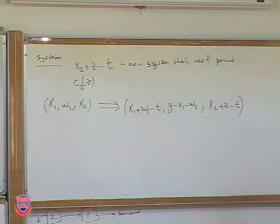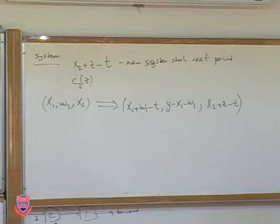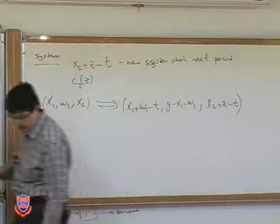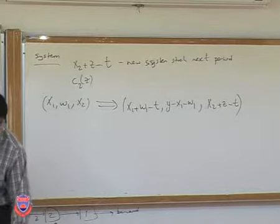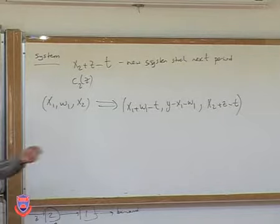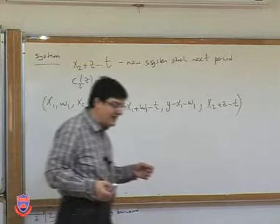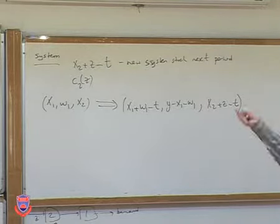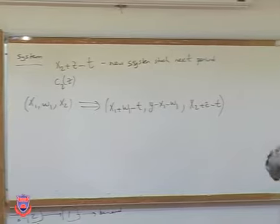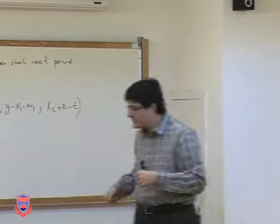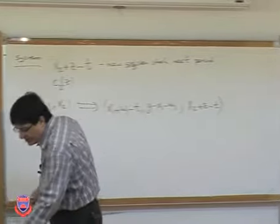This is the transformation from one period to the next after taking all decisions. This is one of the key steps — it corresponds to writing the state equations in dynamic programming, where the state changes with decisions and you write the state for the next period.